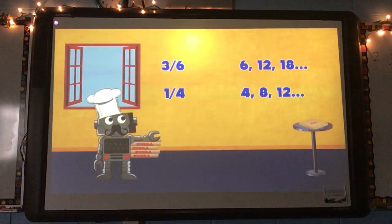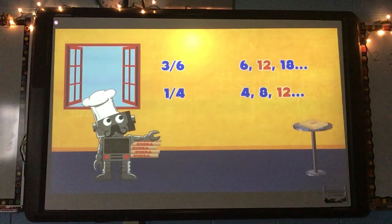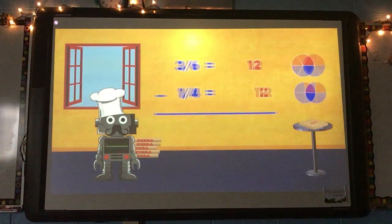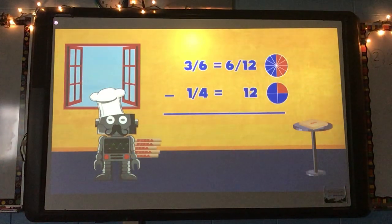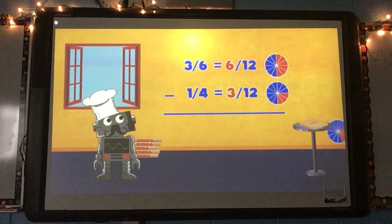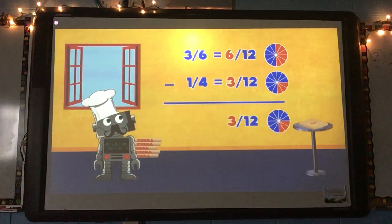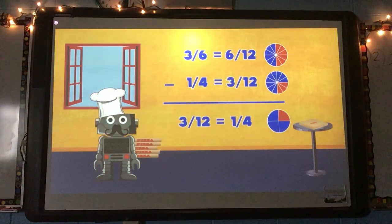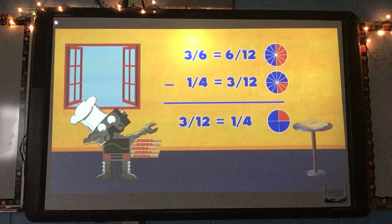Find the least common multiple — that's the first action. Next is finding equivalent fractions. Then do the addition or subtraction. Simplify like an automatic reaction.